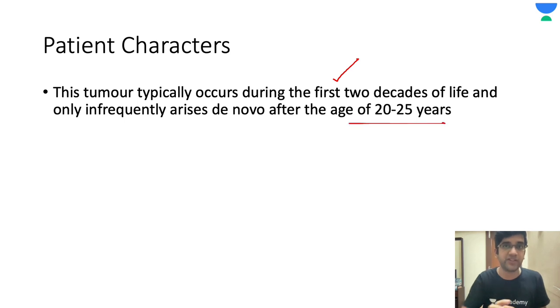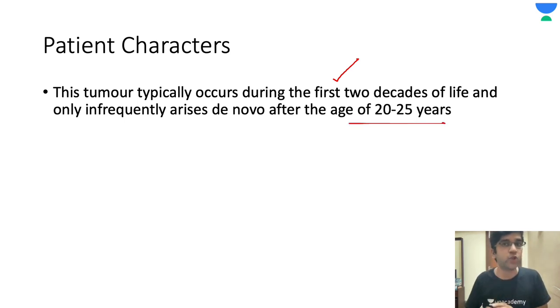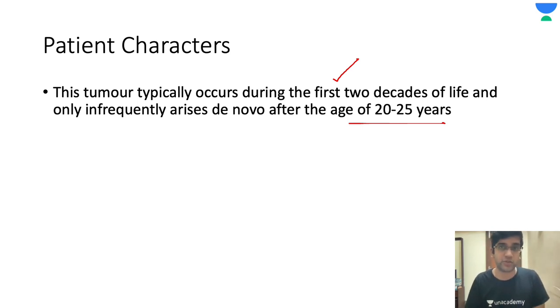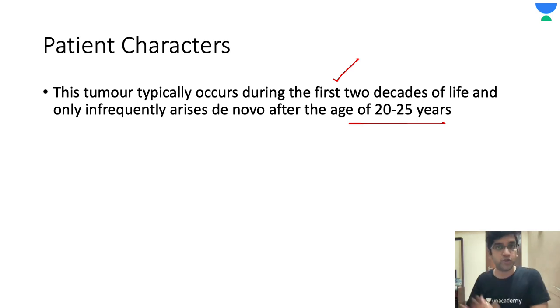After 20 to 25 years, if it happens, it's very, very rare — it's going to be a de novo SEGA. So when you see a patient with SEGA, a subependymal giant cell astrocytoma, you are going to evaluate for tuberous sclerosis.